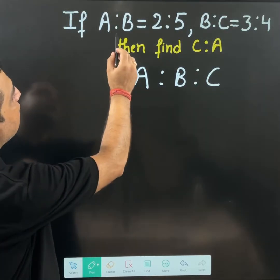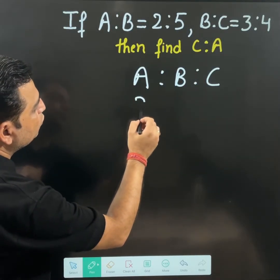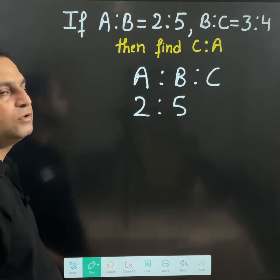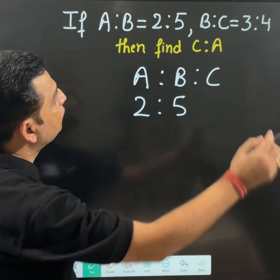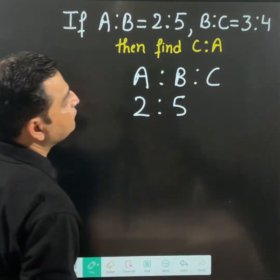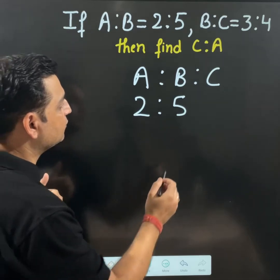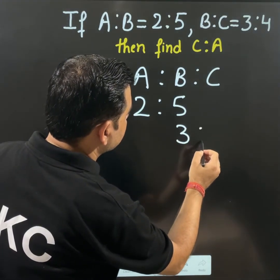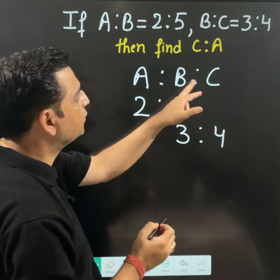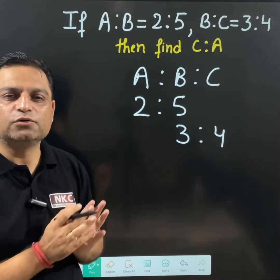Now A ratio B is given as 2 ratio 5, right? So I am writing 2 ratio 5 here. What is B ratio C given? This is 3 ratio 4 but I am going to write it in the next line here. 3 ratio 4 because B ratio C is there. So this is the data given to me.